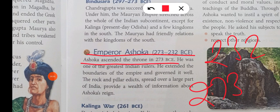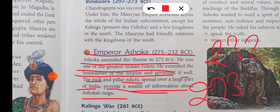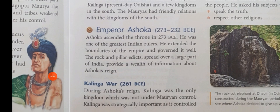Ashok ascended the throne in 273 BCE and ruled until 232 BCE. He was one of the greatest Indian rulers. After Bindusara, Ashok succeeded to the throne. He extended the boundaries of the empire and governed it well. His rock and pillar edicts are spread over a large part of India and provide a wealth of information about Ashok's reign.